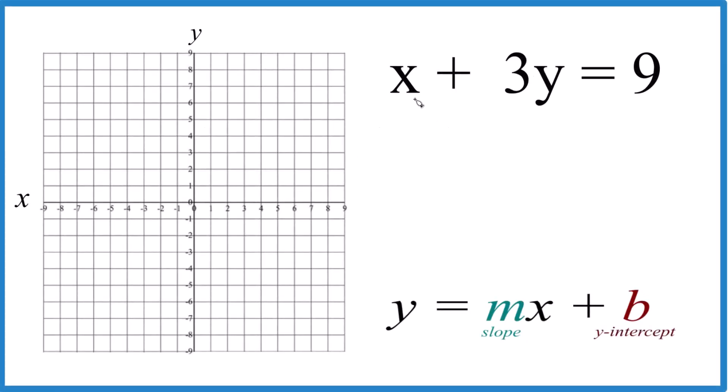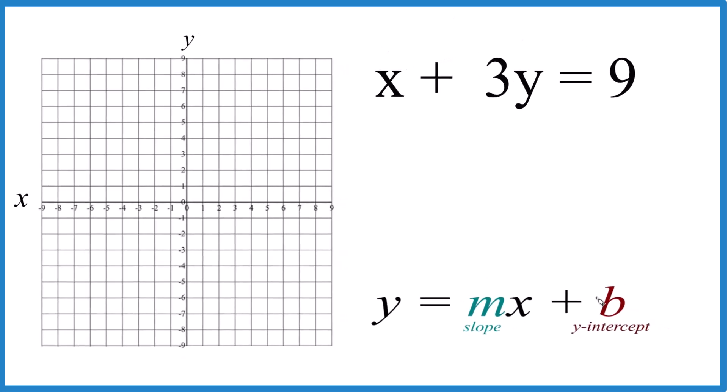So let's graph the equation here. We have x plus 3y equals 9. Two ways you could do it. You could use a table of values, we'll talk about that later, or slope intercept form. I like slope intercept form, a little bit quicker here, but we do need to rearrange this so we have y equals mx plus b.